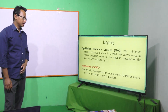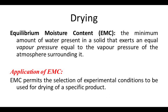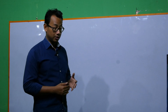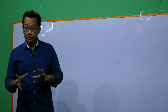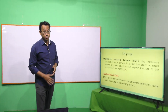The next terminology is equilibrium moisture content or EMC. EMC and unbound water are almost similar, but one should be careful: in case of unbound water, the comparison is drawn between the sample moisture and that of pure water. Whereas in case of EMC, the comparison is drawn between the sample moisture and that of the atmosphere surrounding it. The EMC is important because it permits the selection of experimental conditions for drying a specific product.